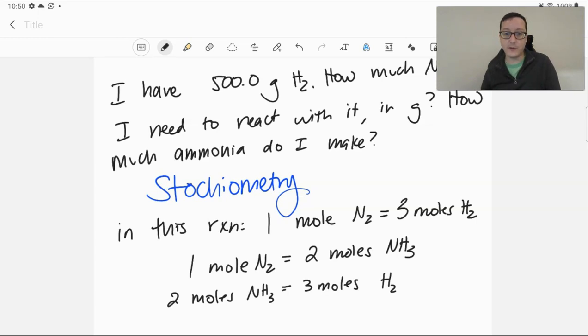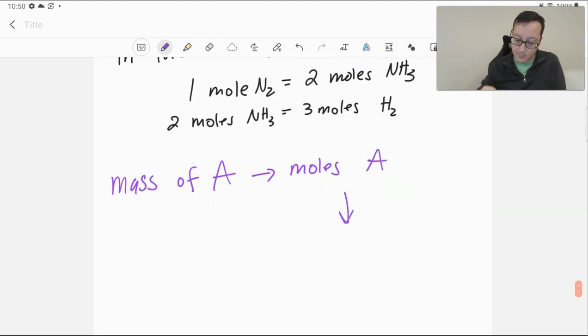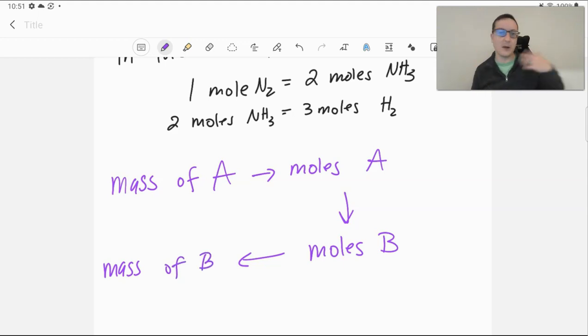And so, if we wanted to convert 500 grams into grams of nitrogen, to see how much nitrogen we need to react with that hydrogen, we need to go through moles. And for right now, we're going to follow the same pathway each and every time. So, we're going to start with our mass of substance A. We're going to convert that to moles of A. We will convert that to moles of our second component of the reaction. And then, from the moles, we'll convert that to mass of B. That's what we're going to be able to do right now. In further chapters, we're going to add things to this kind of diagram.